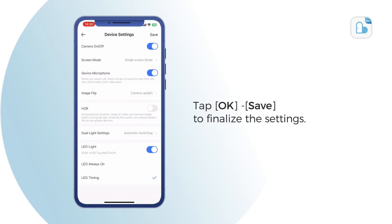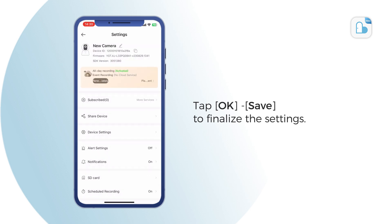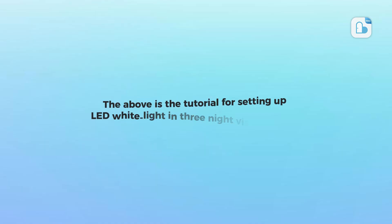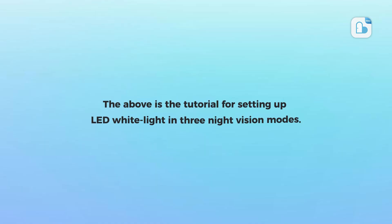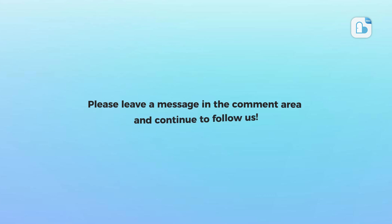Tap OK and Save to finalize the settings. The above is the tutorial for setting up LED white light in three night vision modes. If you want to see anything else, please leave a message in the comment area and continue to follow us.